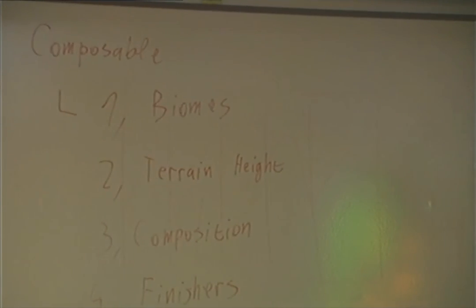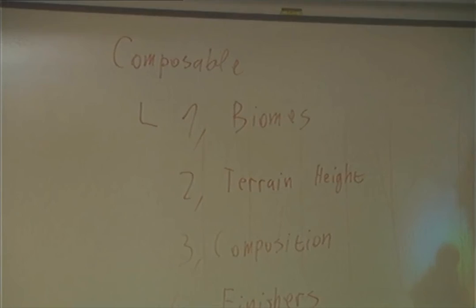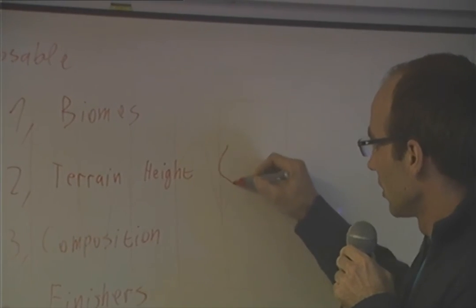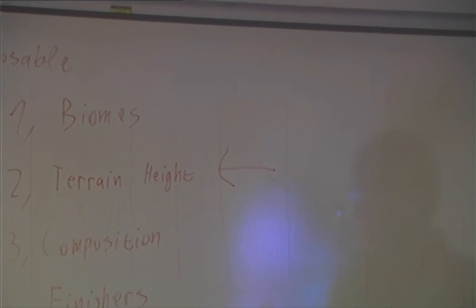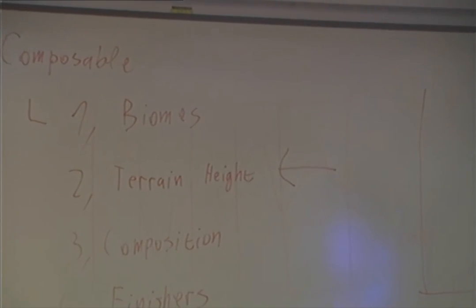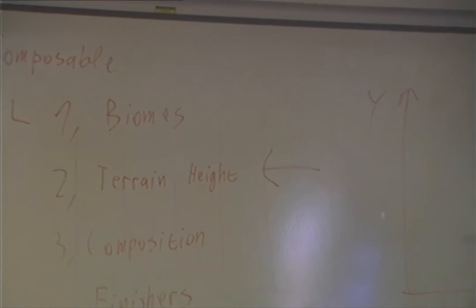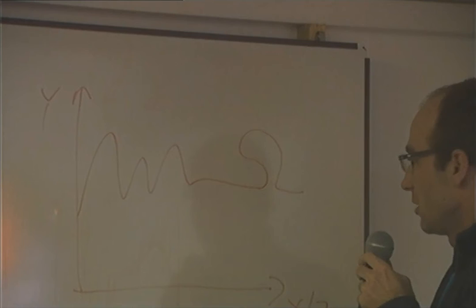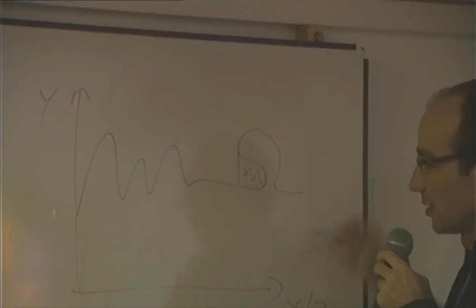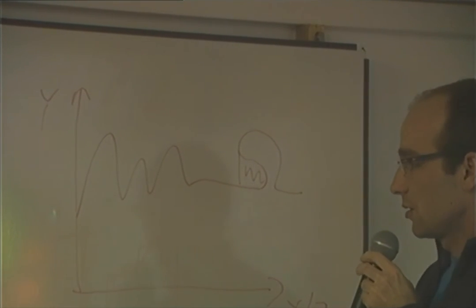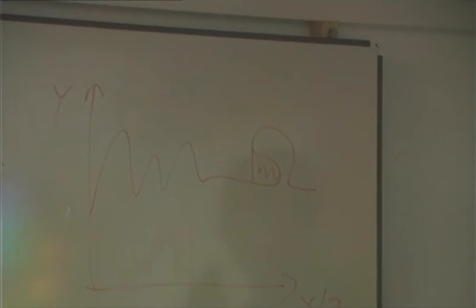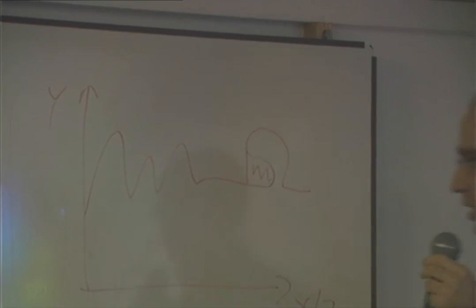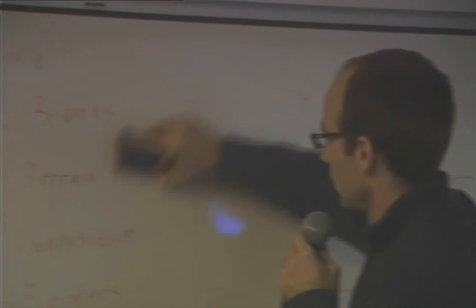This composable generator idea came about two years ago, but there has been a problem with step two. When generating terrain height — with x or z on one axis and y as height — we can get mountains and planes, but we can't get overhangs. There's simply no way a terrain height function specifying one y value per x,z coordinate could represent an overhang. We tried to emulate overhangs with a finisher, but it didn't work well, so we decided to get rid of terrain height entirely.